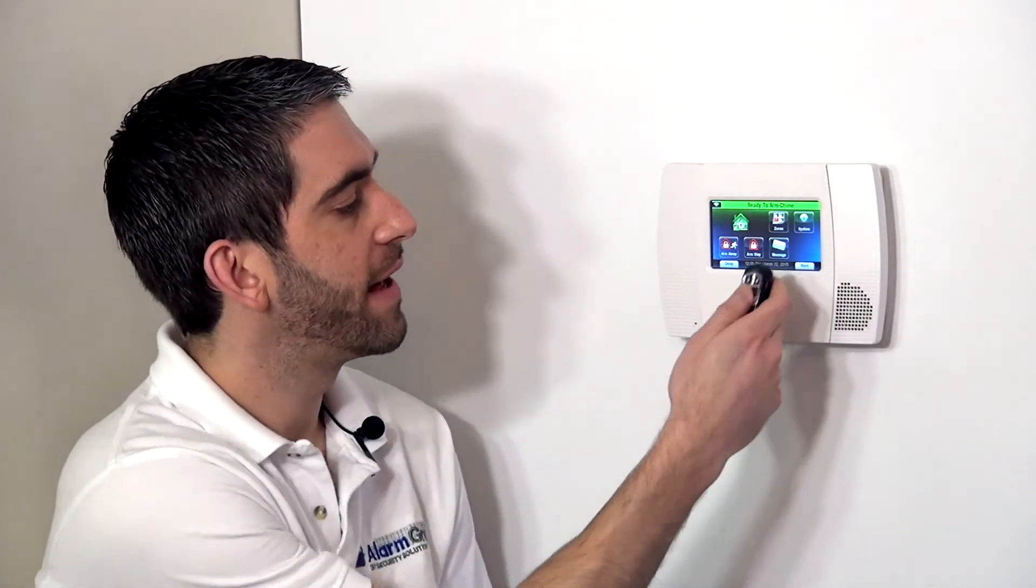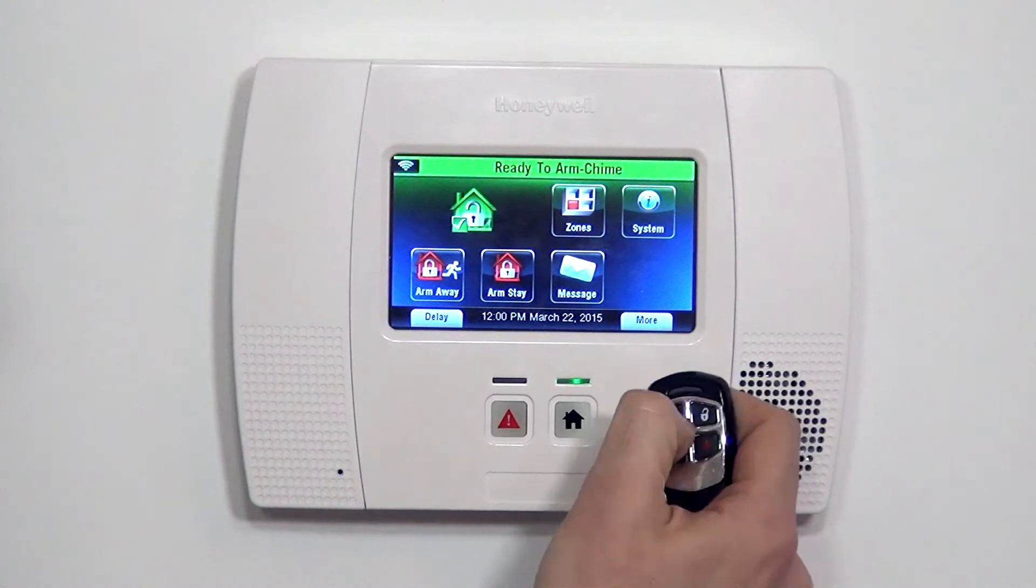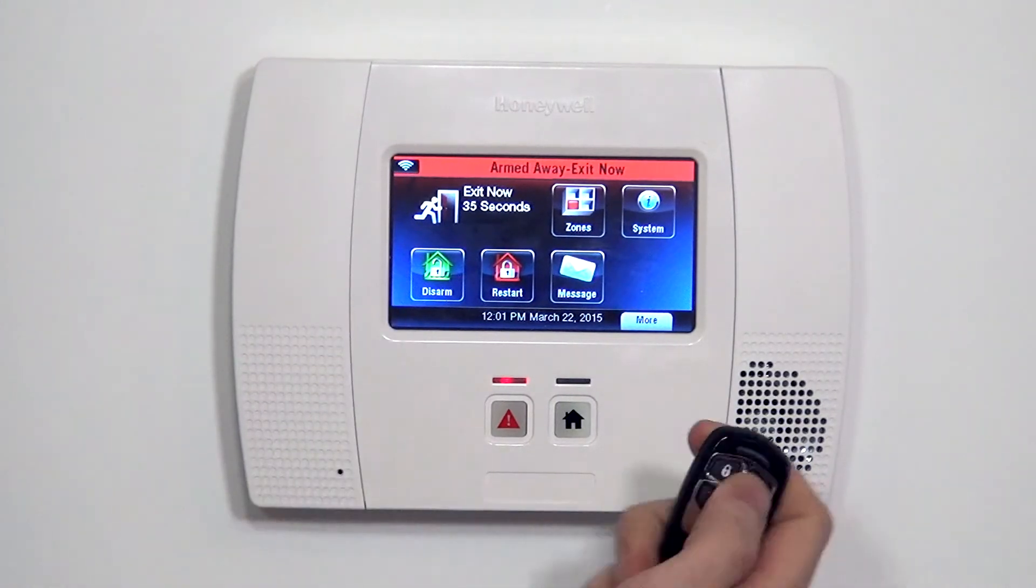So now that we've programmed our 5834-4EN to our L5200 system, we can show you that it's working. We press and hold the top left button, which is arm away. Armed away. Exit now. We have our exit delay, our period where we can leave the home without triggering an alarm, and we can disarm.